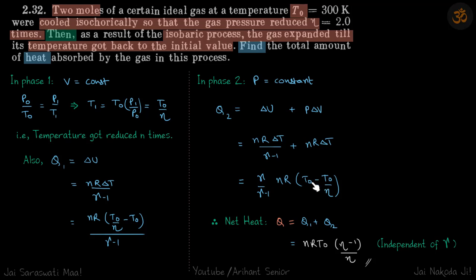Minus T1, T1 is T0 by eta, right? So net heat for both the processes is Q1 plus Q2. We just add these two and get our answer.